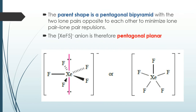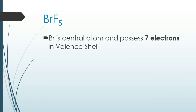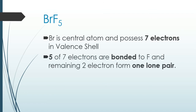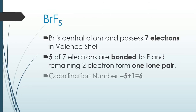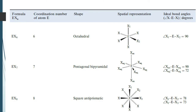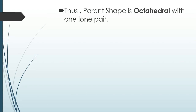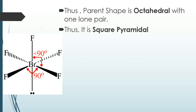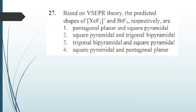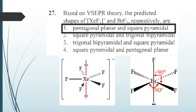Similarly, for BrF₅, Br is the central atom and belongs to group 17 with 7 valence electrons. Five of these are used for bonding with fluorine, and the remaining two electrons form one lone pair. The total coordination number is 5 + 1 = 6. A coordination number of 6 gives a parent octahedral shape, and filling this octahedral geometry with one lone pair gives a square pyramidal structure for BrF₅.